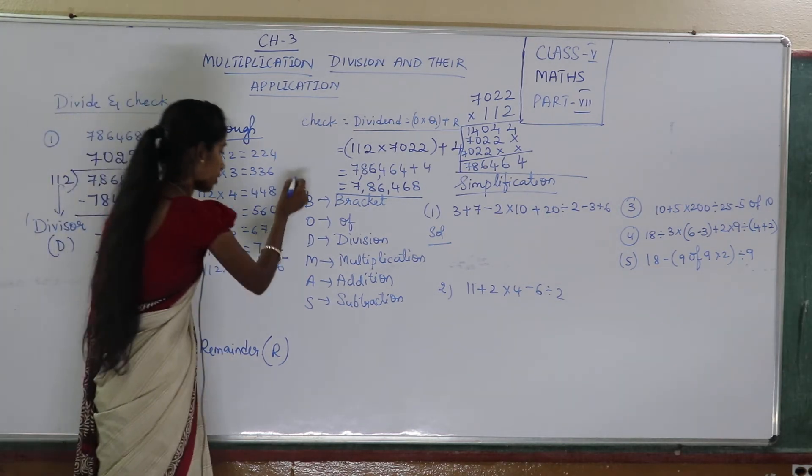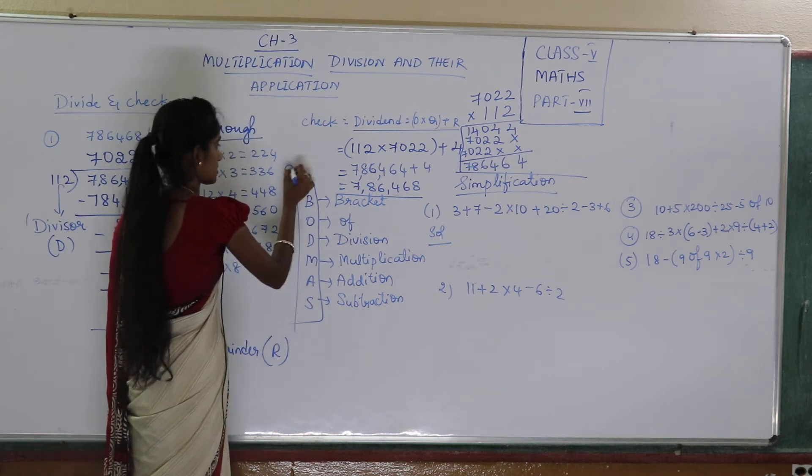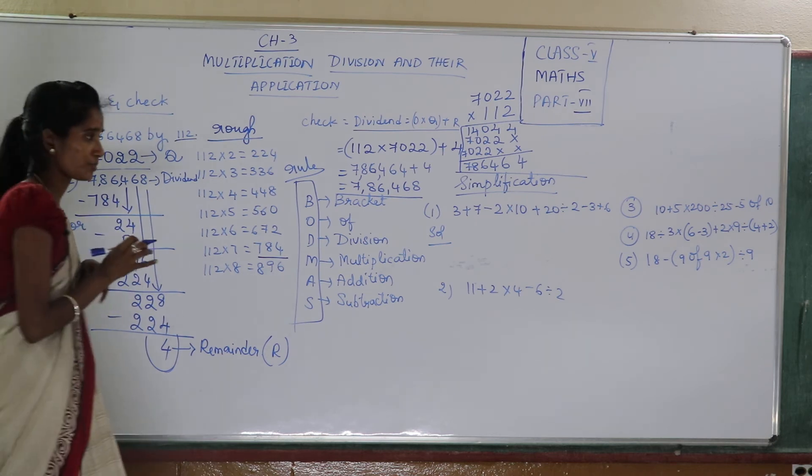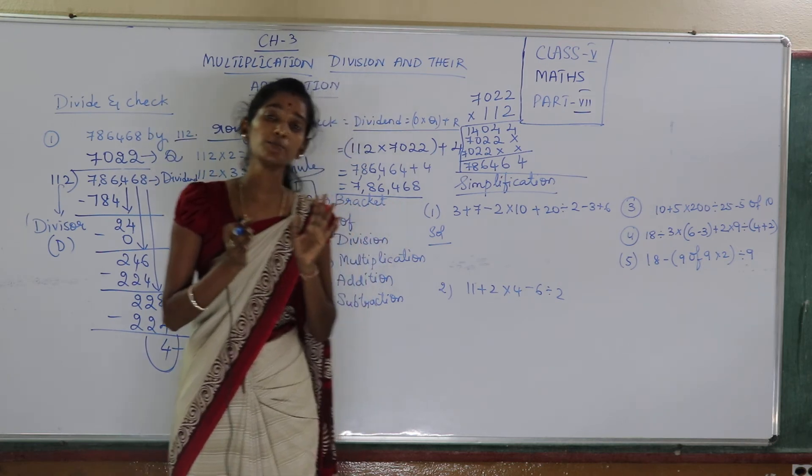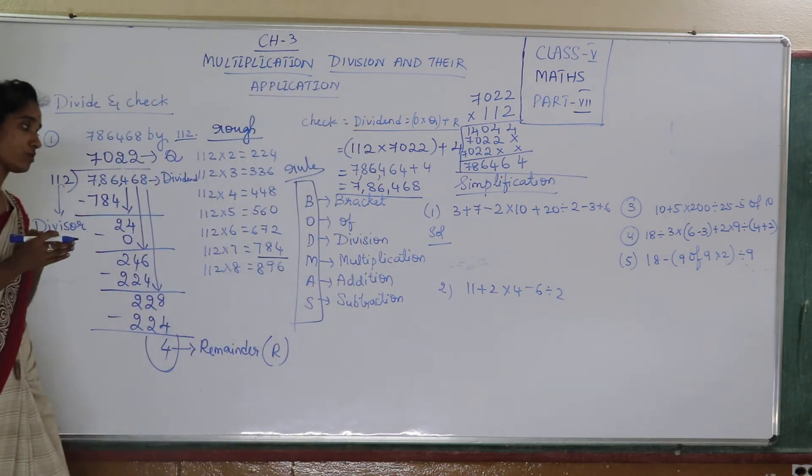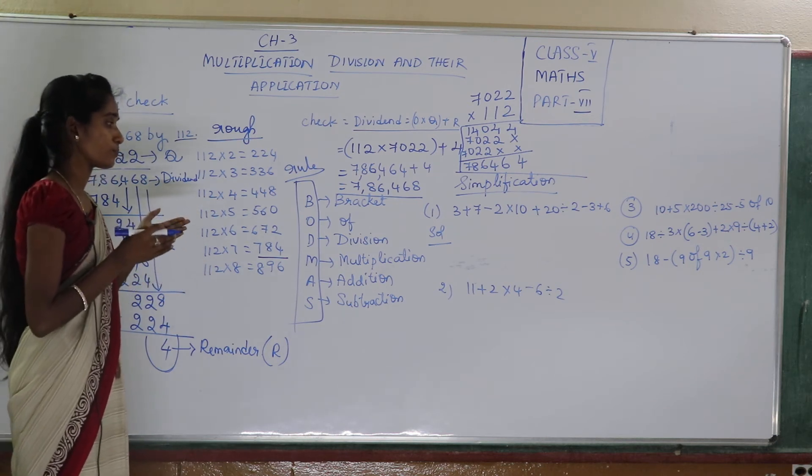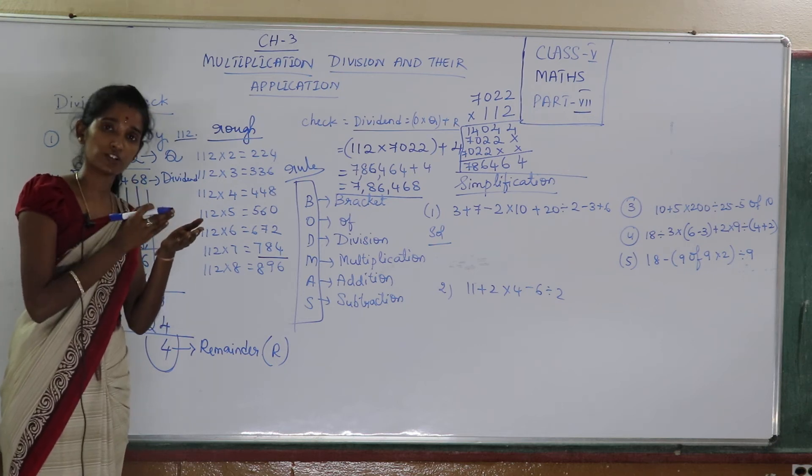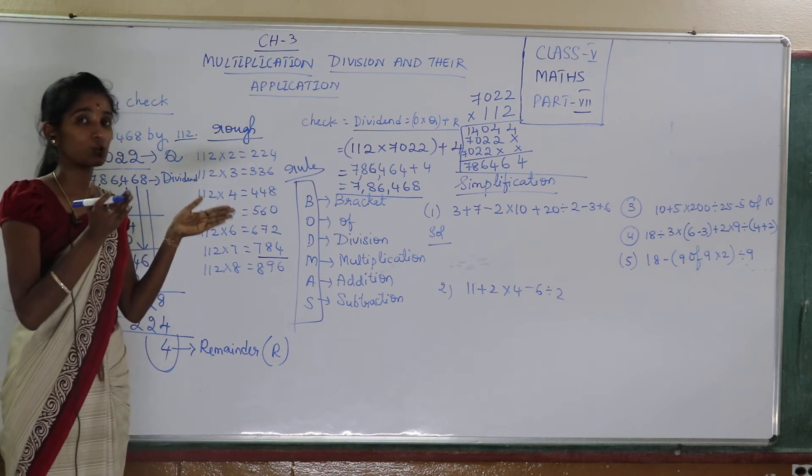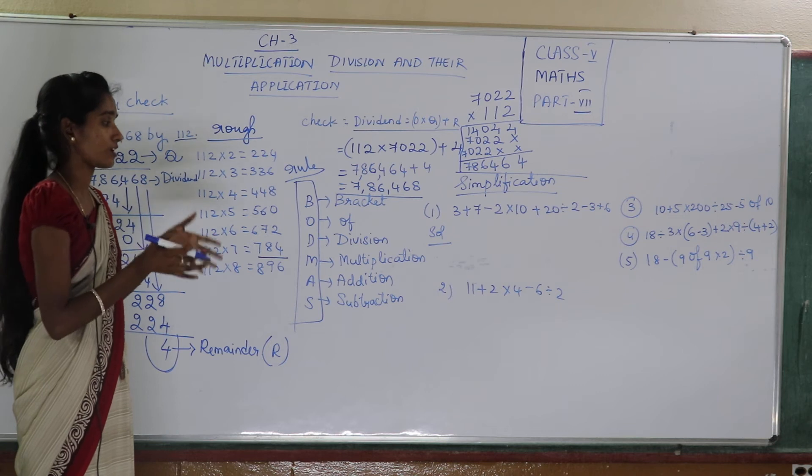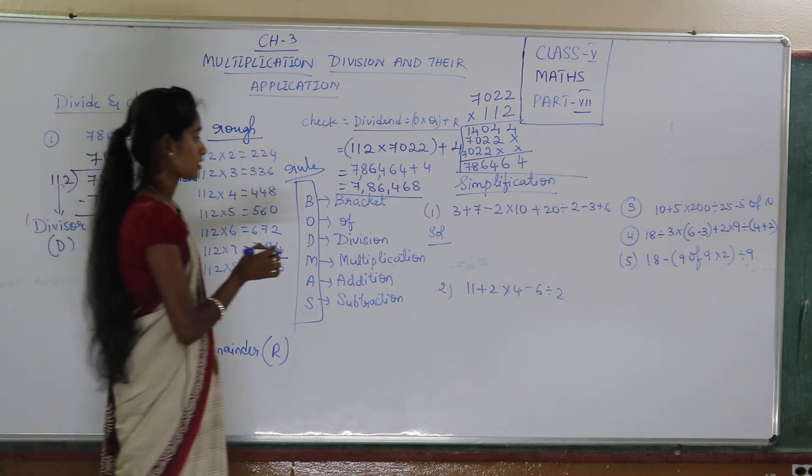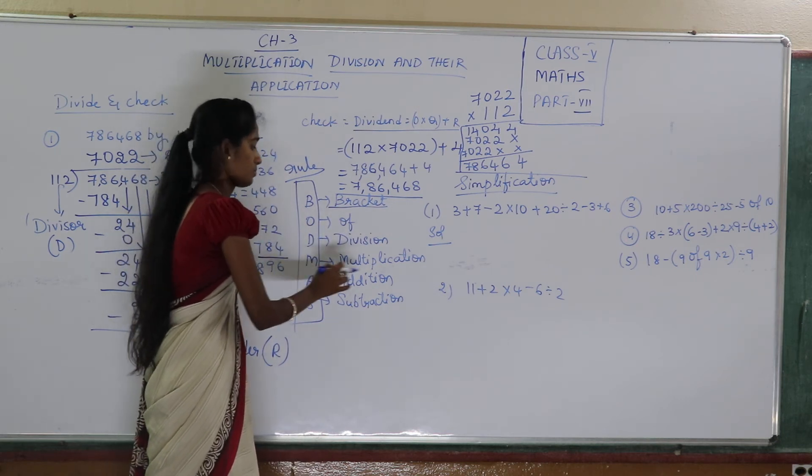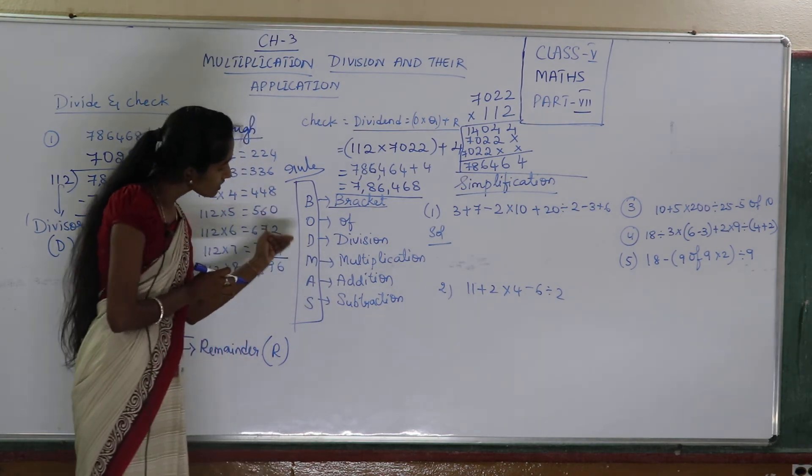Now the next is your BODMAS rule. We call this as BODMAS rule. Till now we did additions separately, deletions separately, subtractions separately and multiplications separately. But this BODMAS rule, what I need to do is, it will combine all my operations together. Means my addition, subtraction, multiplication, division. So it will combine and create a problem and you should be able to solve it. So how to solve this? He has given me the steps. Now see, bracket or B means bracket, O means of, D means division, M means multiplication, A means addition, S means subtraction.